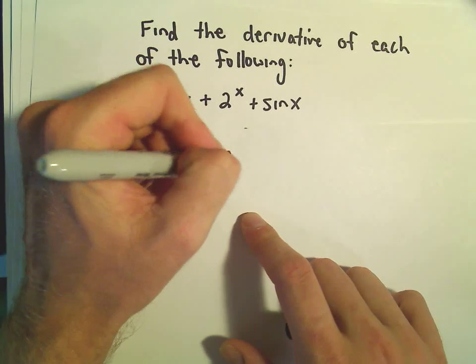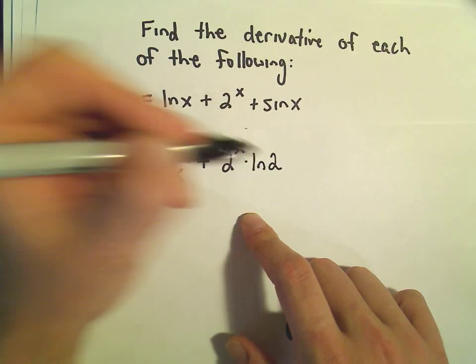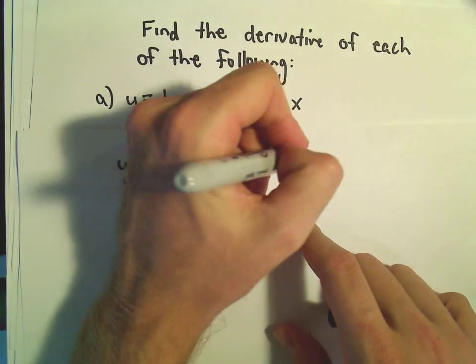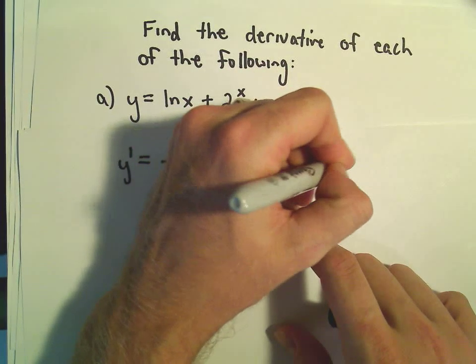The derivative of 2 to the x, we've seen that one, that's just 2 to the x times the natural logarithm of 2. And then the derivative of sin x is just cos x.